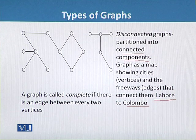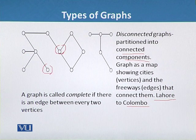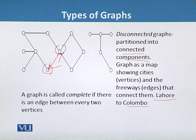Because there is an ocean between Lahore and Colombo, we cannot travel directly from one to the other. This is an example of a disconnected graph. The last type is the complete graph. A graph is called a complete graph if there is an edge between every two vertices in that graph.